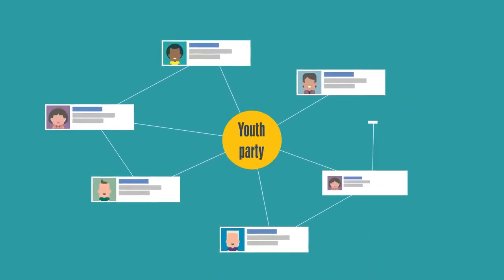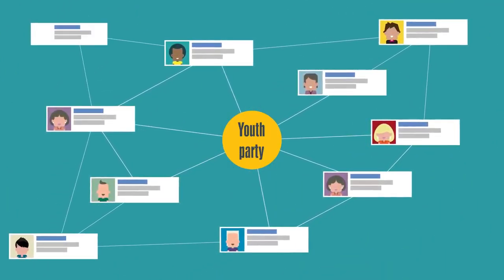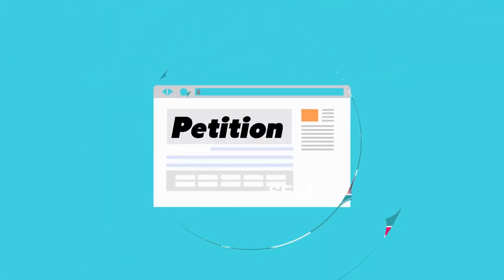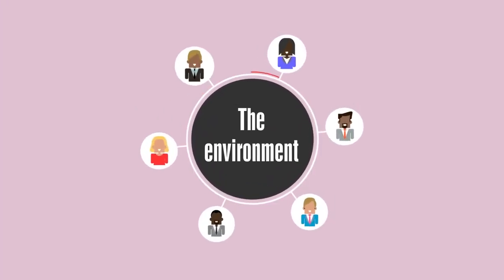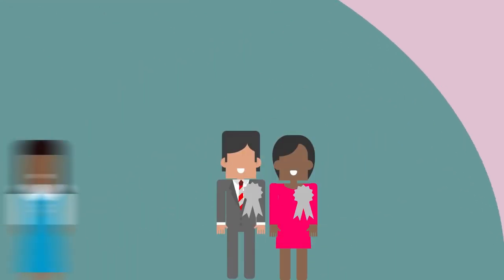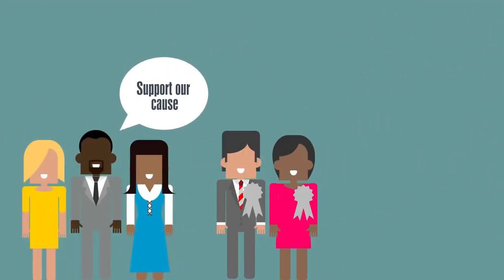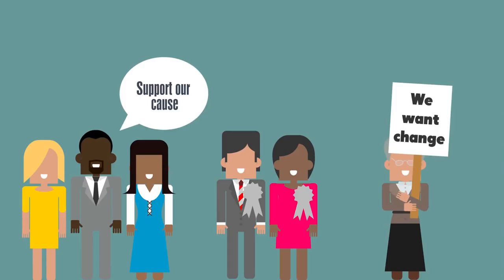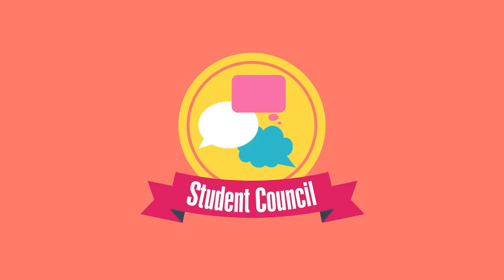Sometimes there's strength in numbers, so to get your voice heard, you could join the youth section of a party, or the UK Youth Parliament. If you're passionate about an issue, you could start a petition for a cause, either on paper or online, or join an existing campaign, pressure or protest group to influence decision making. These groups use different methods to get their voices heard, from lobbying to peaceful protest, all designed to bring about change. And don't forget, you can get your voice heard in school or college too, by joining or starting a student council — a bit like a mini-parliament.